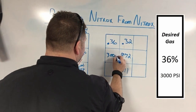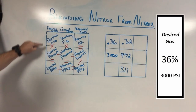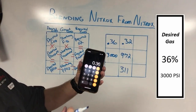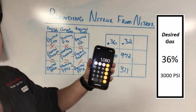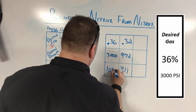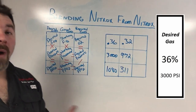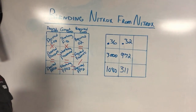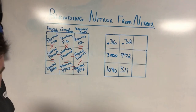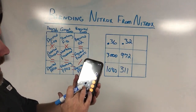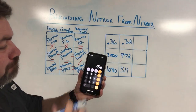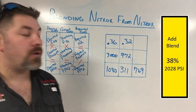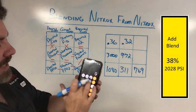I know the cylinder holds 3000 psi, which is my desired pressure, so I write 3000 psi. Desired FO2 times desired pressure gives the desired PPO2: 0.36 times 3000 = 1080 psi. Now, to get the required gas — how much I need to add — I subtract the two rows. Desired PPO2 minus starting PPO2: 1080 minus 311 = 769 psi. Then for the second row: 3000 minus 972 = 2028.